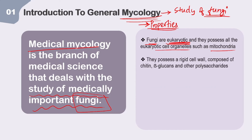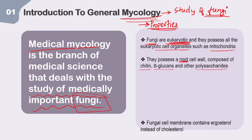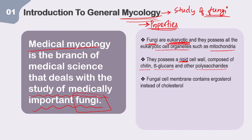Regarding the cell wall: it is rigid and composed of chitin, beta-glucans, and other polysaccharides. Regarding the cell membrane: in bacteria the cell membrane contains cholesterol, but in fungi it contains ergosterol — this is an important distinguishing feature.